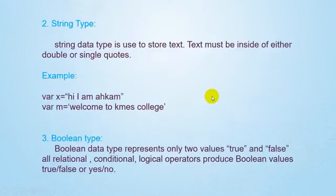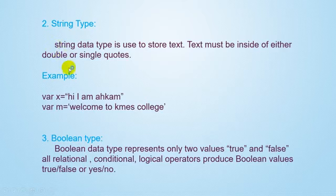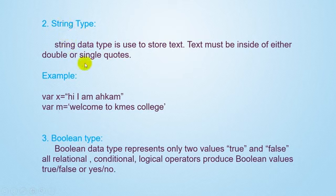Next we have the String data type. At the start of my lecture I told you the collection of character is called as a string. Collection of character means if you have only one character, for example S, it is a character. But if it becomes more than one character, for example ST, that is more than one character and it becomes a string. All the collection of character comes in the category of string data type. String values are written or saved with double inverted comma or single inverted comma.